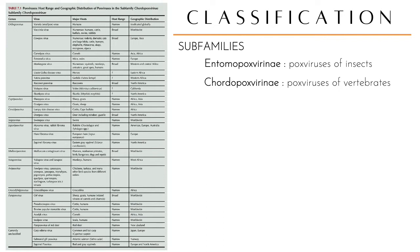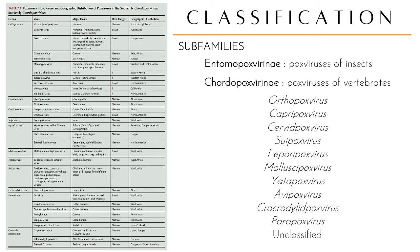There are 10 genera under Chordopoxviridae, and some viruses which are still unclassified — including the carp edema virus, salmonid gill pox virus, and squirrel pox virus — which do not fall under any genera.